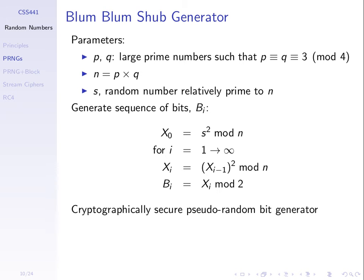The last step is that instead of using the full number x that comes out, you take the last bit of that number. If you mod a number by 2, you get that last bit — 0 or 1. This is quite a simple algorithm that generates a quite good sequence of pseudo-random numbers. There's an example on the next slide.